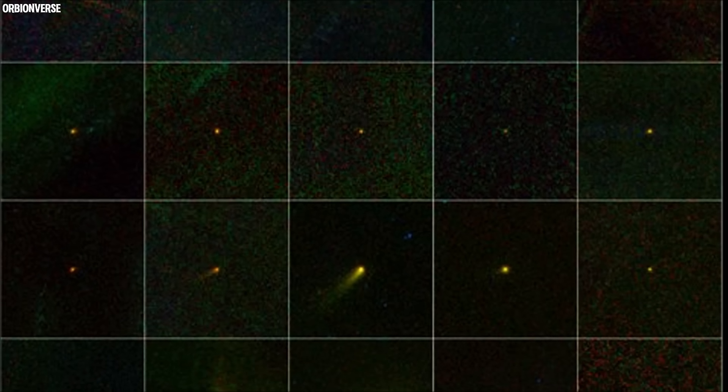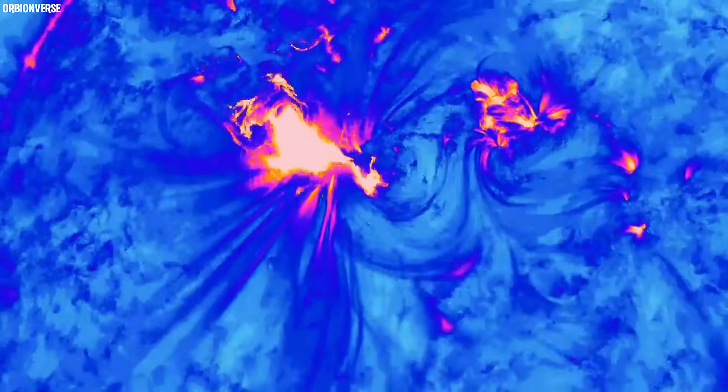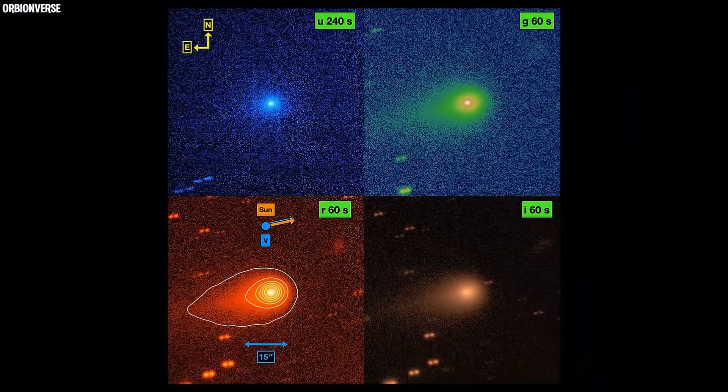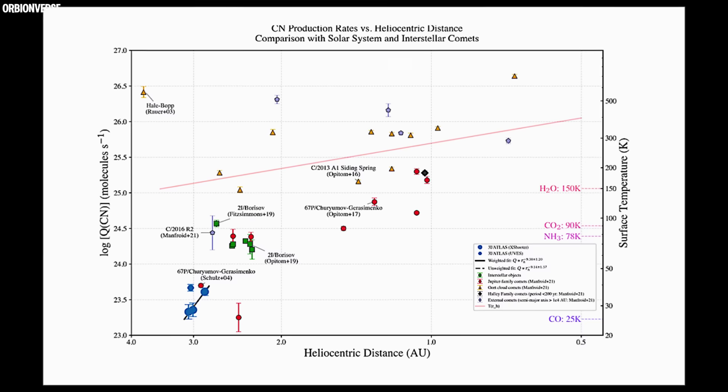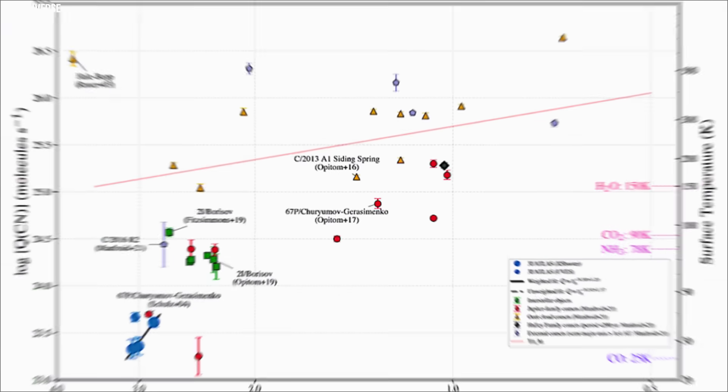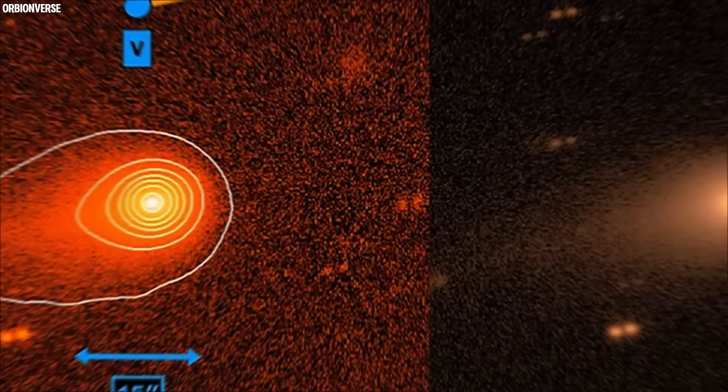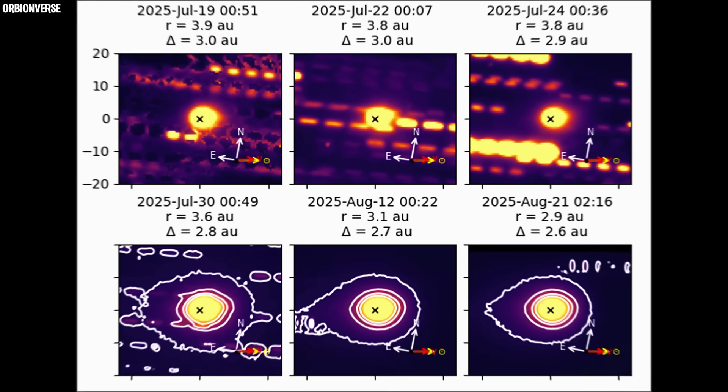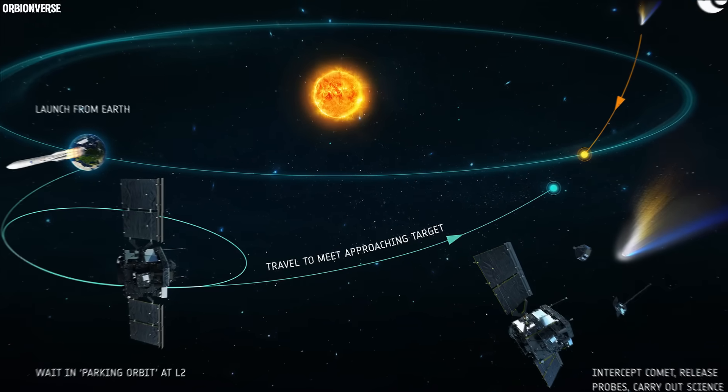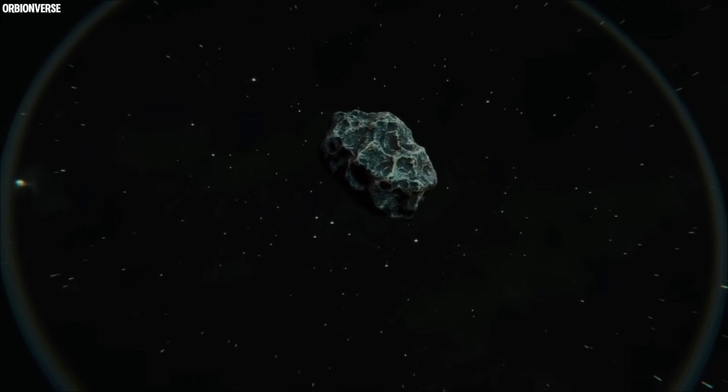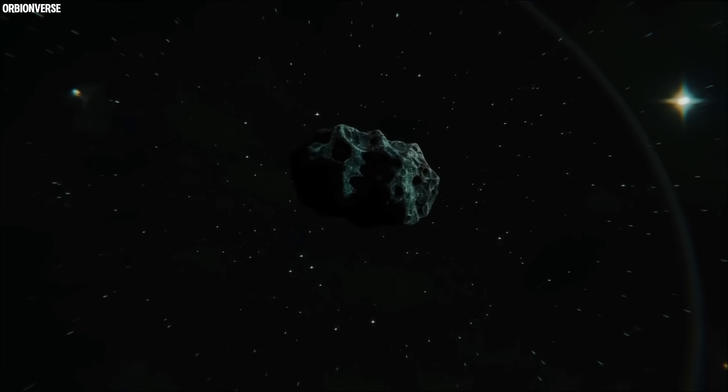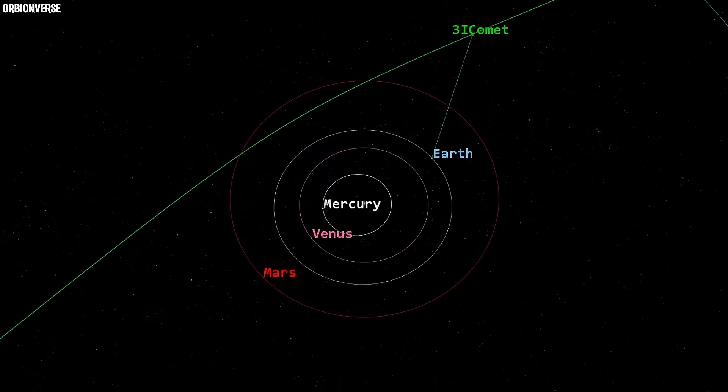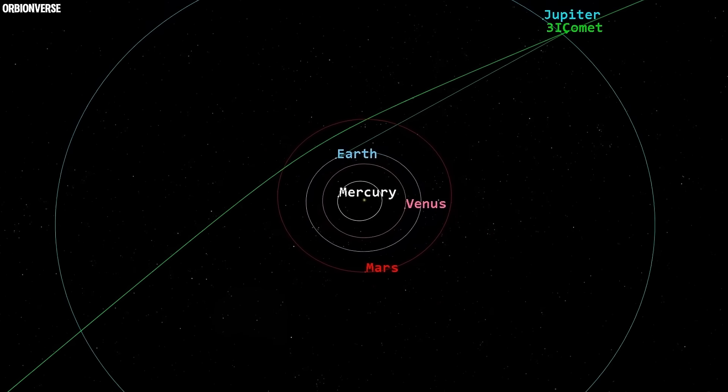You see, every comet we've ever studied was born in our solar system, built from materials shaped by our own sun's radiation and chemistry. 3I/ATLAS, by contrast, is alien in every sense. It formed under a foreign star, with unfamiliar minerals, unknown compositions, and a structure hardened by eons in the frozen gulf between solar systems. It has survived the radiation of deep space, micrometeorite collisions, and cosmic rays for millions, perhaps billions, of years. What happens when something like that faces the raw fury of our sun? The truth is, no one knows. If it's fragile, it could explode into a cloud of debris, scattering the secrets of another star across the void. But if it's resilient, metallic, dense, perhaps even partially reflective, it might endure the sun's assault and continue past, becoming the first interstellar object to be tracked through both inbound and outbound solar passes.